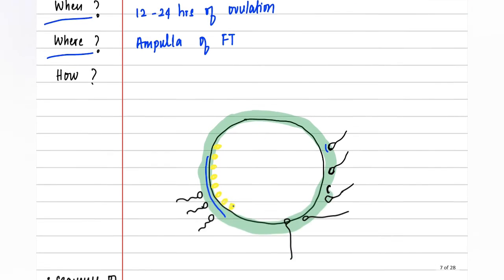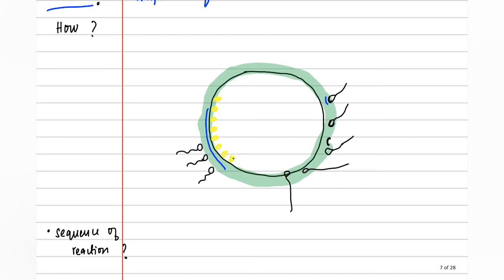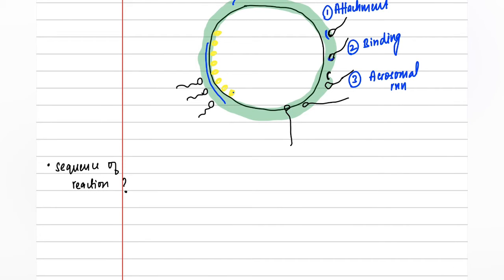How does fertilization occur? The prerequisite is that the sperm should reach the ovum. It occurs in many stages. The first stage is attachment, where the sperm attaches to the zona pellucida — this is a tough membrane-like covering which covers the ovum. The second stage is binding. The third phase is the acrosomal reaction, in which the sperm, equipped with an acrosome, releases many enzymes.